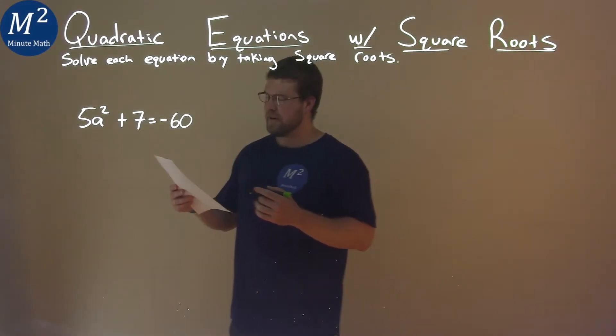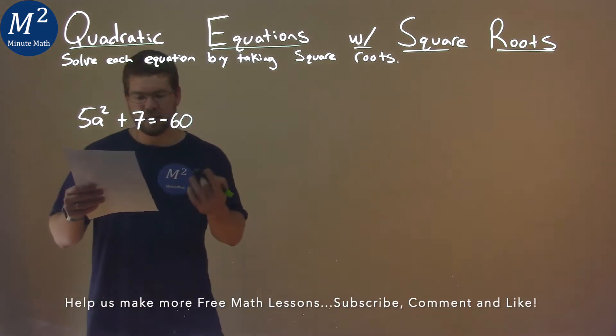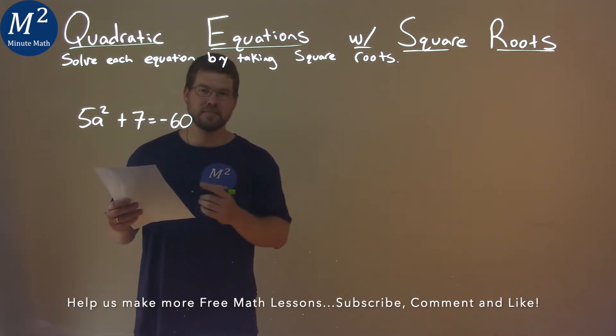We're given this problem right here: 5a squared plus 7 equals negative 60, and we have to solve this equation by taking square roots.